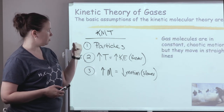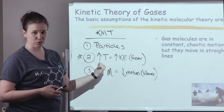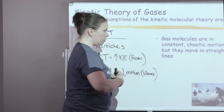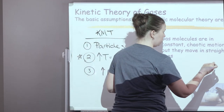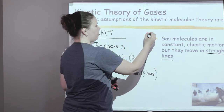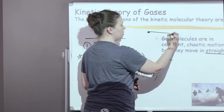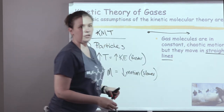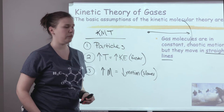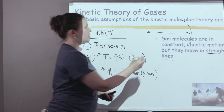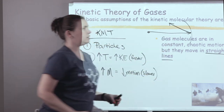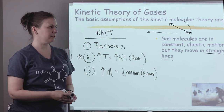Something else about the particle motion we didn't get into much last time was the type of motion. They actually do move a lot, and although that seems very chaotic, they move in straight lines. So if I have a particle of gas, it's going to continue to move, kind of following the law of inertia, in a straight line until it hits something like the wall of the container. Once it does that, it would bounce or be refracted somehow, but continue to move in a straight line.